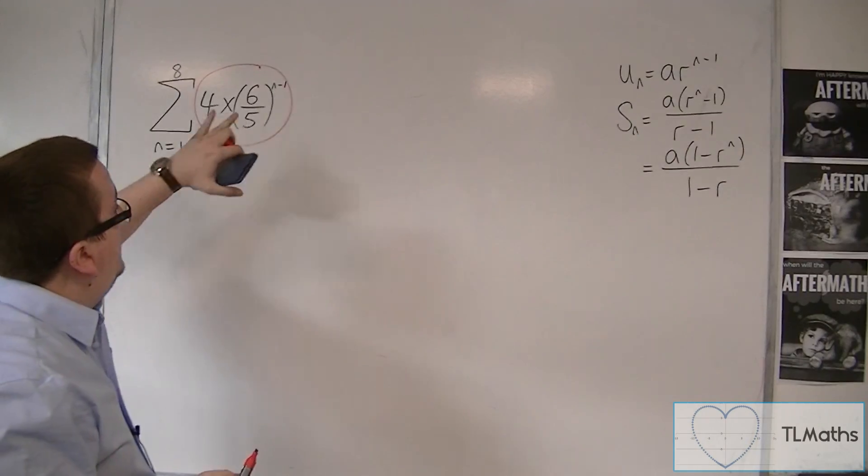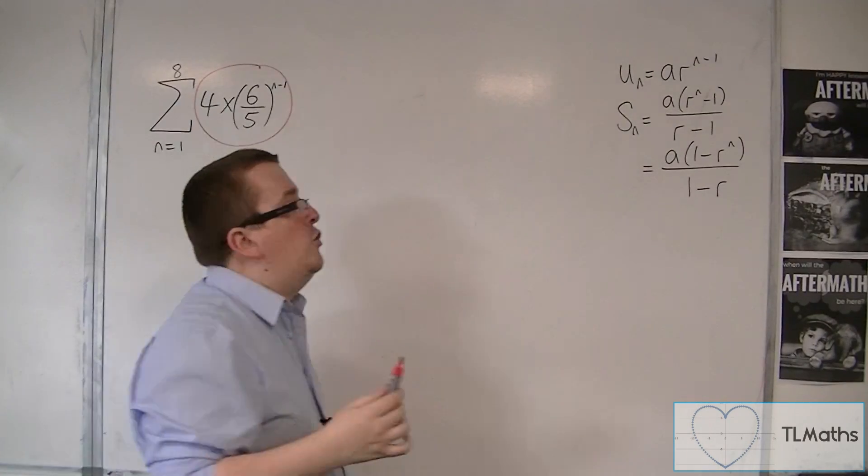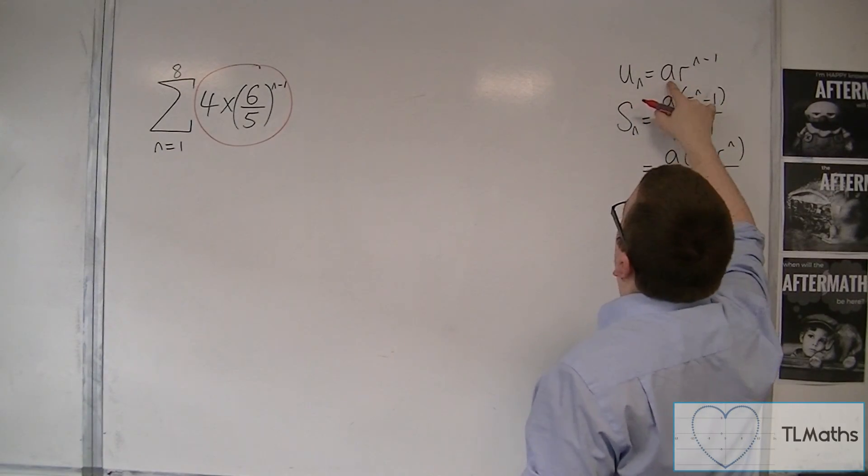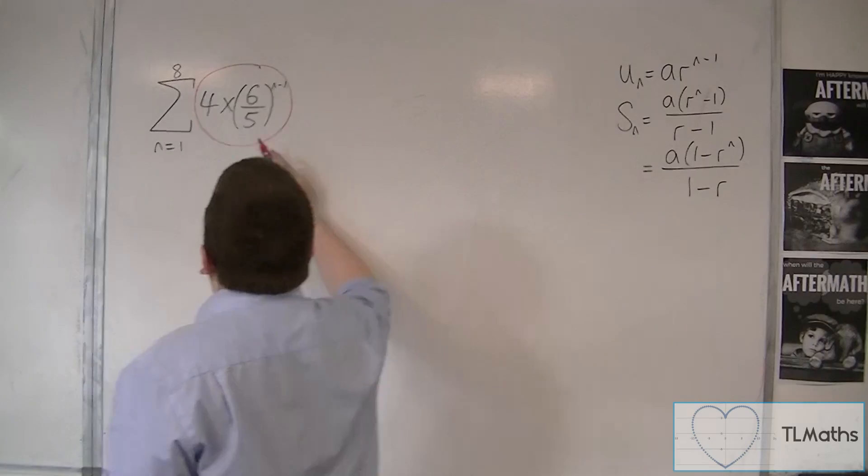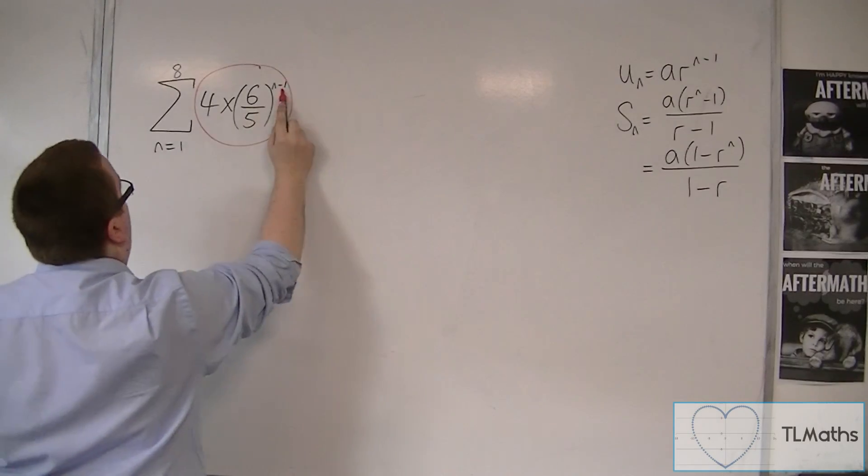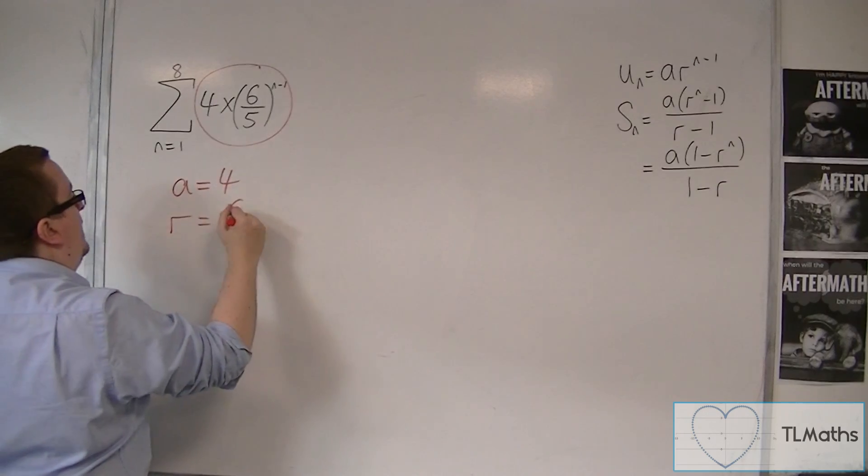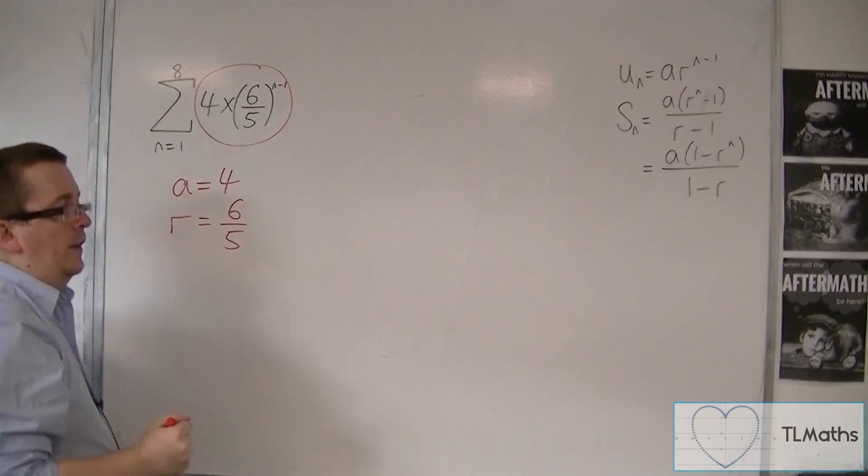And this, in this example, relates directly to the nth term that we have here: a times r to the n minus 1. So that easily identifies a as being 4 and r as being 6 fifths. Okay,